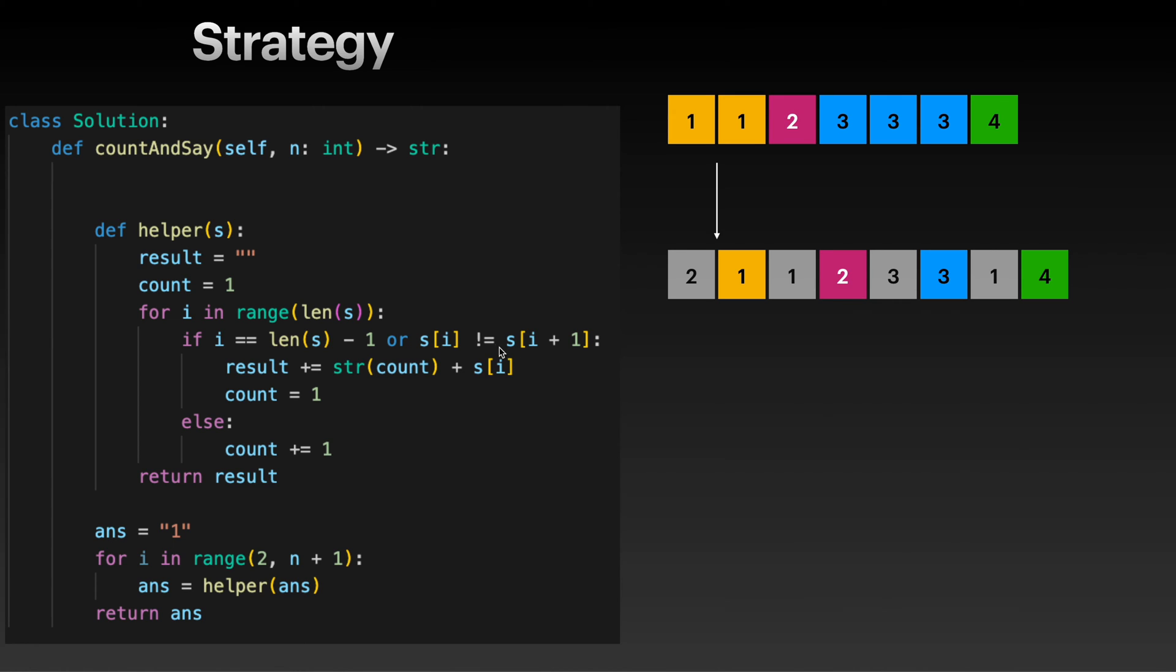So we will be appending our result. We have a concatenation here - count is an integer, so we turn it into a string plus s[i]. s[i] in this case is just 1, so we will get 2 of 1, so "21". And then we set count equal to 1.